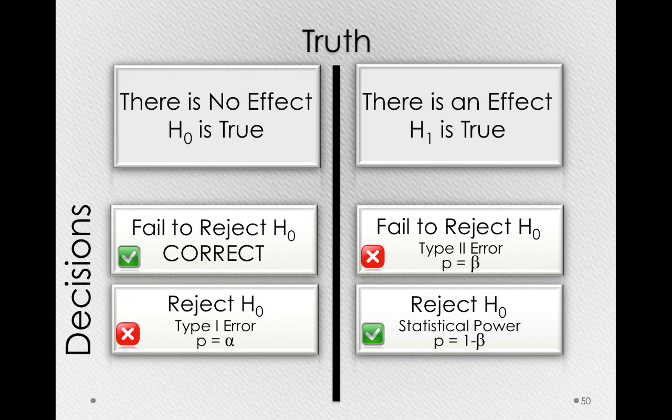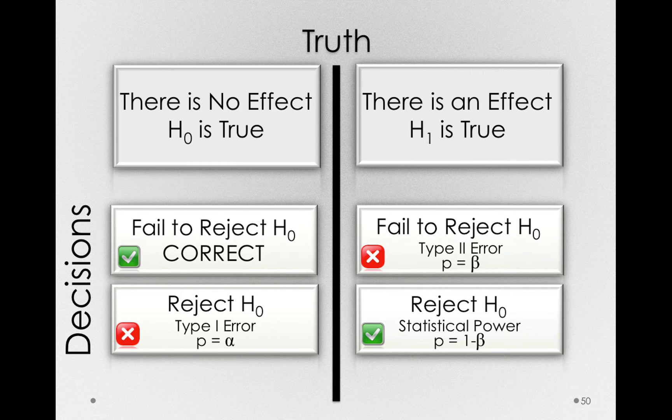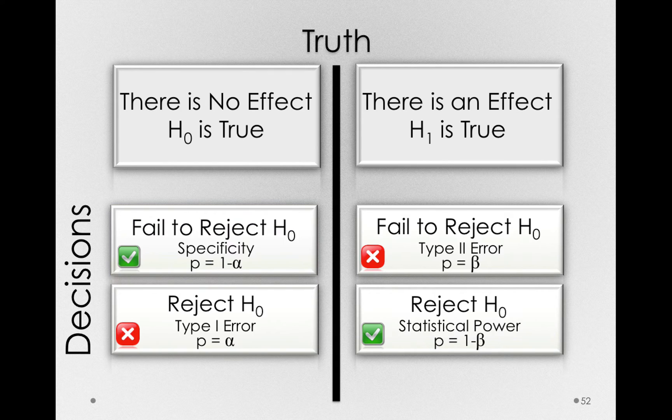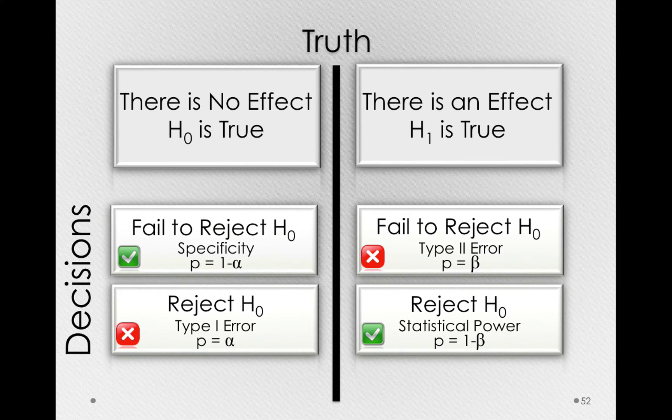On the other side of the world, if there really is no effect, that is, H0 is true, and we fail to reject the null hypothesis, this is known as the specificity of the test, and it occurs with probability 1 minus alpha.